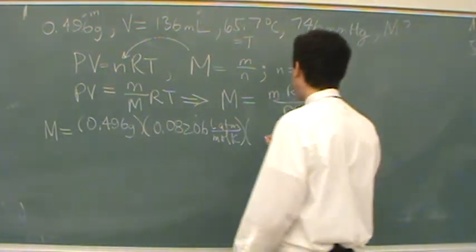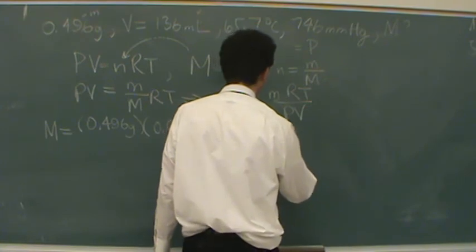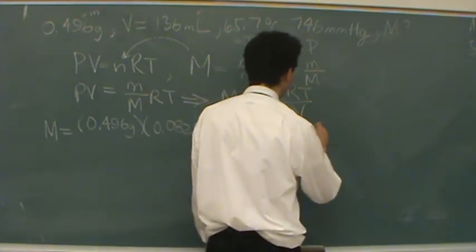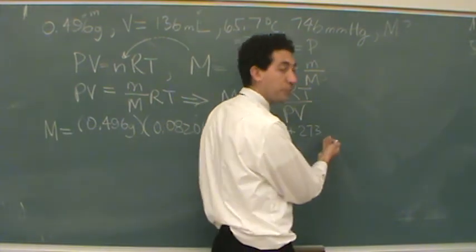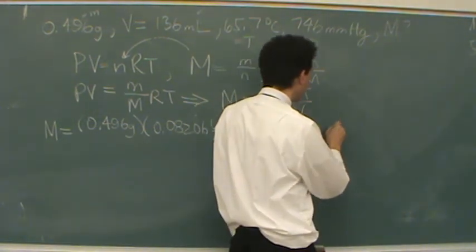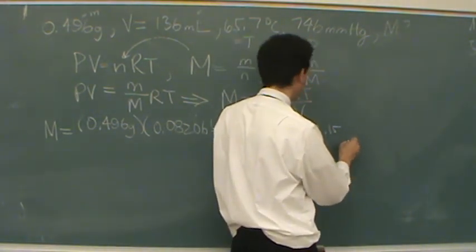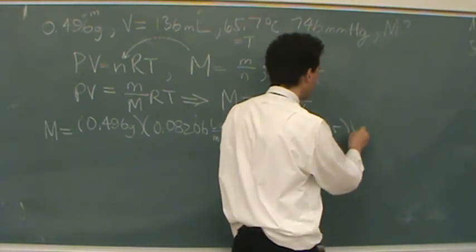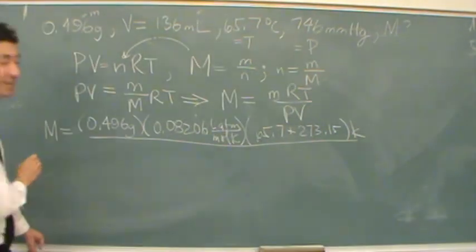T is going to be 65.7 plus 273. I usually just keep three sig figs here. If you're really into it, you could add the .15. It's totally up to you, but that'll be units of Kelvin. For an exam, I wouldn't care.